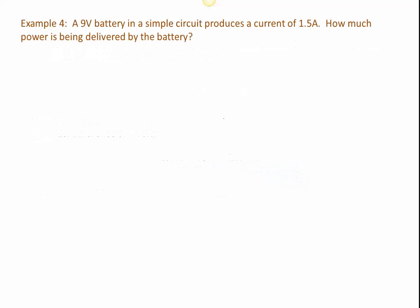Just like before, that's really all the formula we need. There are other ways to represent this — E equals P divided by I, or I equals P divided by E — but we only need P equals E times I. So: a 9-volt battery in a simple circuit produces a current of 1.5 amps. How much power is being delivered? P equals E times I, so P equals 9 multiplied by 1.5. That's a straight multiplication: P equals 13.5 watts.